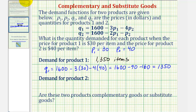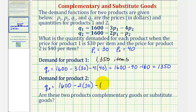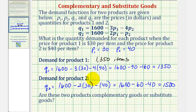The demand for product two, Q sub two, equals one thousand six hundred minus two times P sub one minus P sub two, or one thousand six hundred minus sixty minus forty, which equals one thousand five hundred. So the demand for product two is one thousand five hundred items.